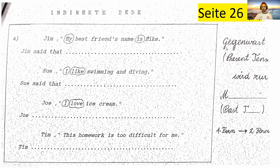Die Gegenwart in English — Present Tense — wird zur... In was verändert sich die Gegenwart? Die erste Form. Hier steht schon: die erste Form wird zur zweiten Form. Hier muss also dann stehen: die Gegenwart wird zur Mitvergangenheit. Und wie nennt man die Mitvergangenheit in Englisch? Past tense.